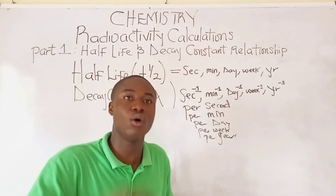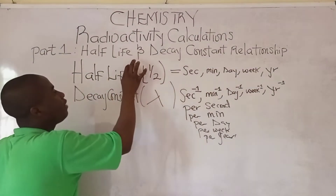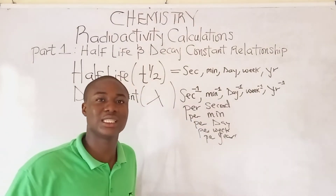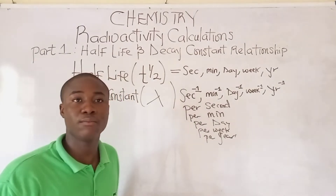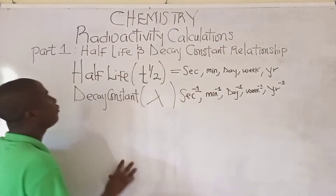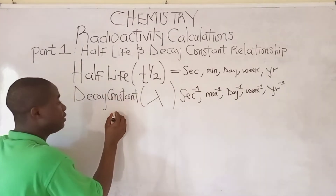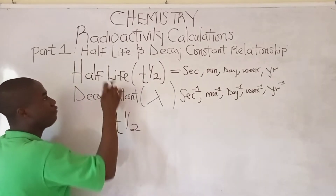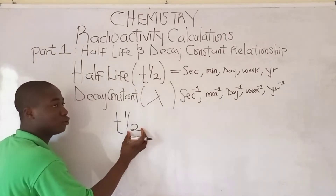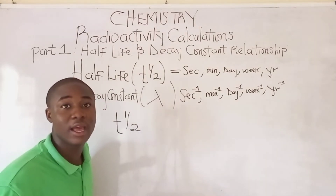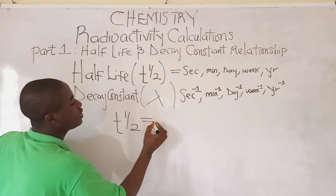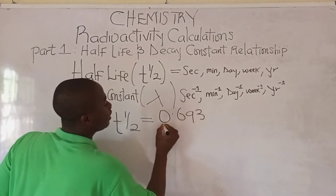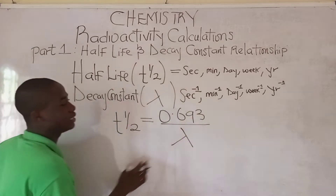Let's quickly move over to the formula that relates half-life and decay constant, because this formula will be very important when solving practice problems. The formula is simply: T-half equals 0.693 over decay constant. Remember, T-half is half-life, and it is just a symbol — not a fraction used to solve.